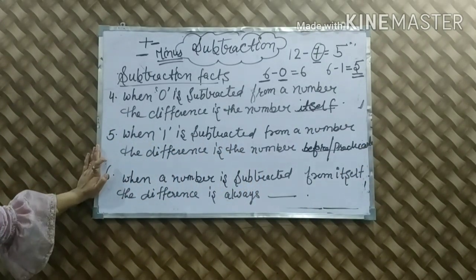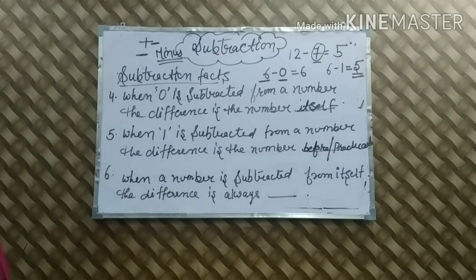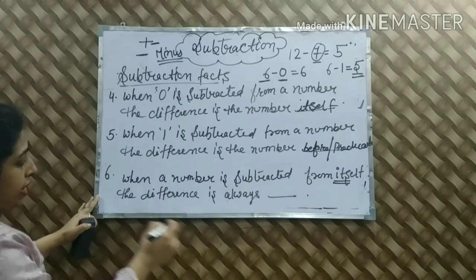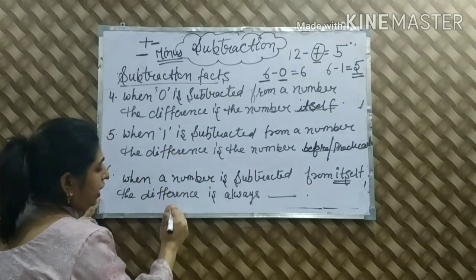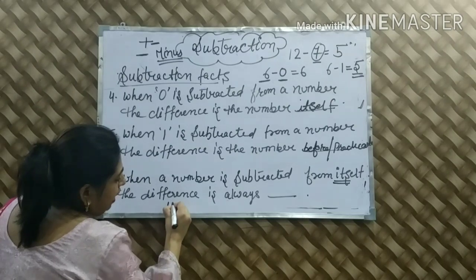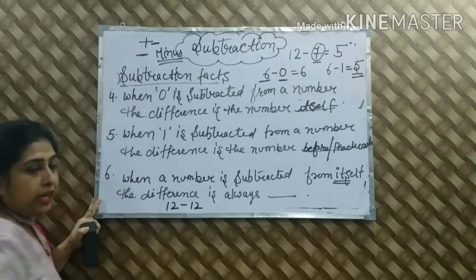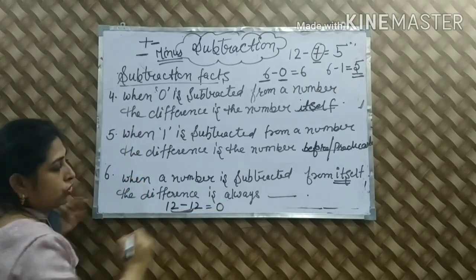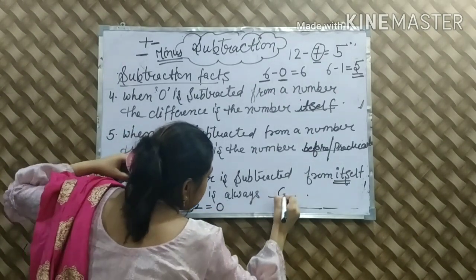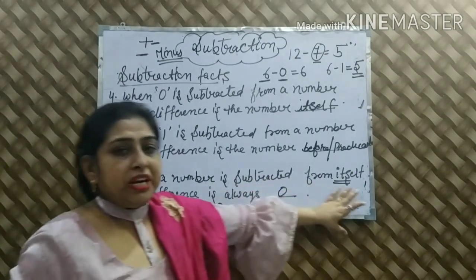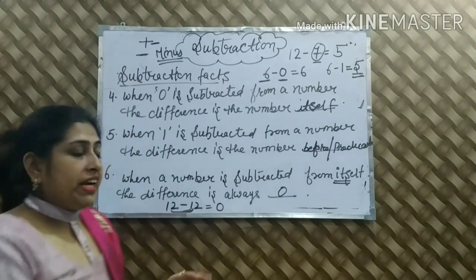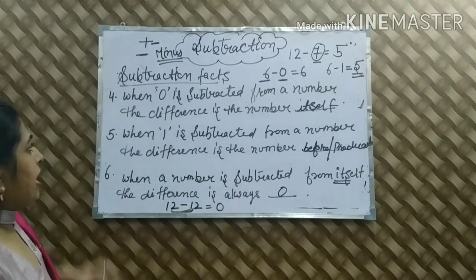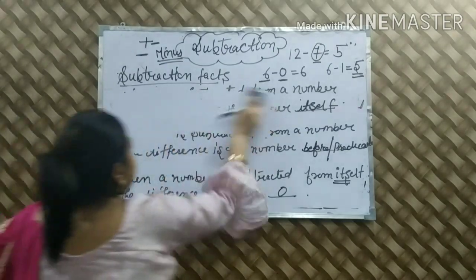Next point: when a number is subtracted from itself — that means the same number — the difference is always zero. We have the number 12; 12 minus 12. When any digit is subtracted from the same digit, the answer is zero. So our difference is always zero when a number is subtracted from itself.